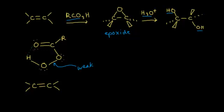This is a concerted eight-electron mechanism, which means that eight electrons are going to move at the same time. The electrons in the bond between oxygen and hydrogen are going to move down to form a bond with this carbon. The electrons in this pi bond are going to move out and grab this oxygen, which will break the weak oxygen-oxygen bond and those electrons move into here. Finally, the electrons in this pi bond are going to move to form an actual bond between that oxygen and that hydrogen.